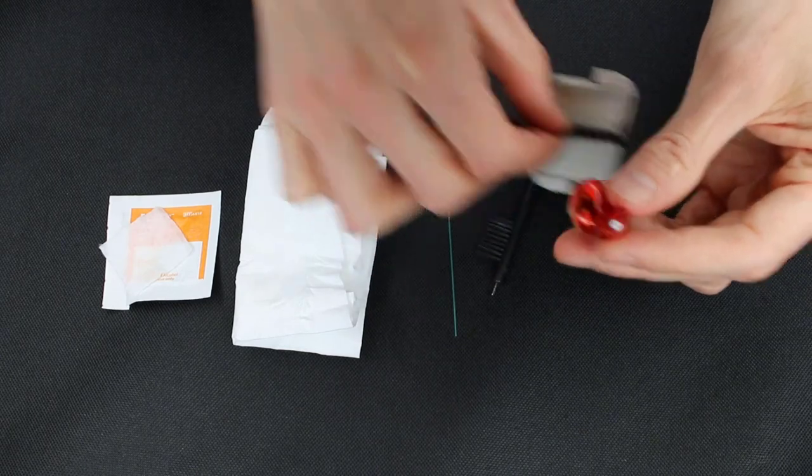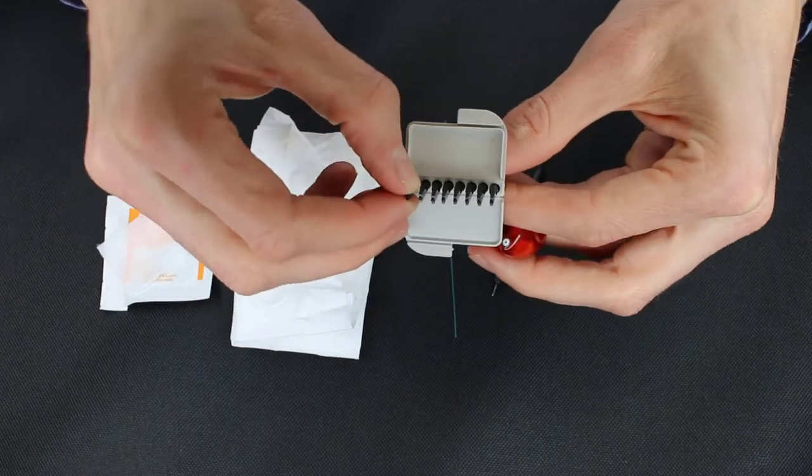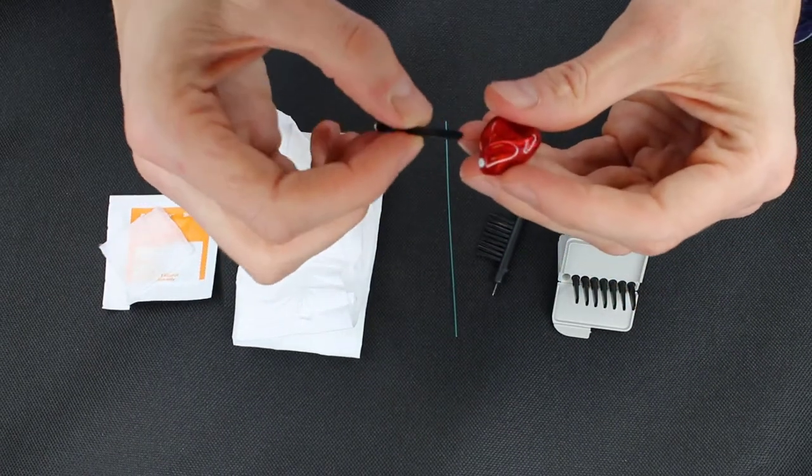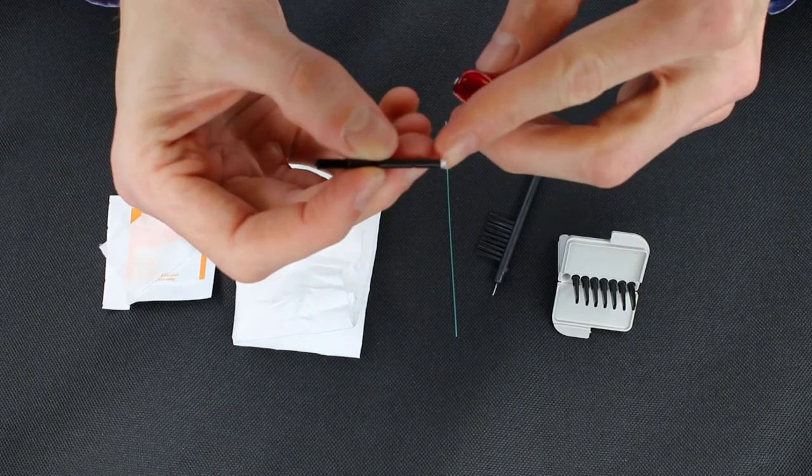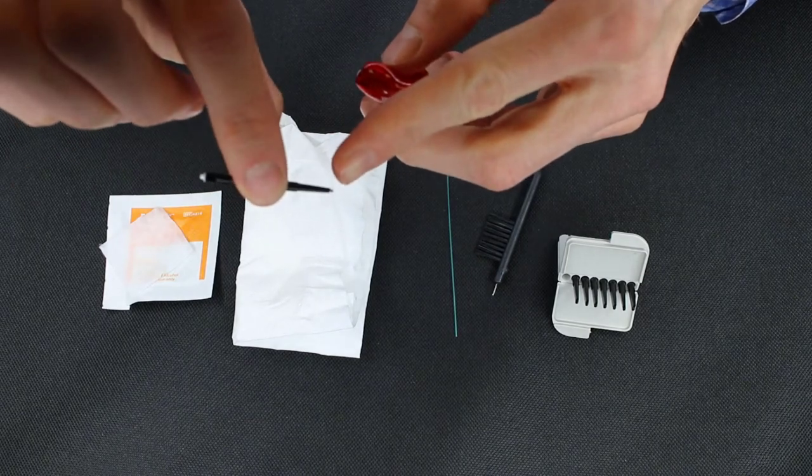So this little kit that we have here is a bunch of wax trap exchangers. And so how this works is we have a new end with the new wax trap, and a removal end that we can take out the old one.